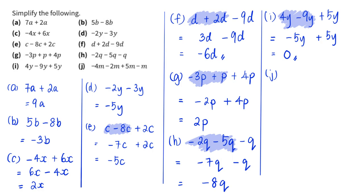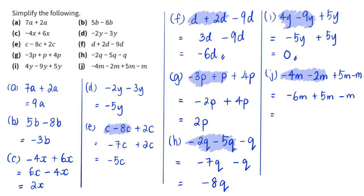Finally, part j: negative 4m minus 2m plus 5m minus 5m minus 1m. From left to right: negative 4m minus 2m gives negative 6m, plus 5m gives negative 1m, minus 1m gives negative 2m as the final answer. With that we have come to the end of this problem, let's move on to the next.